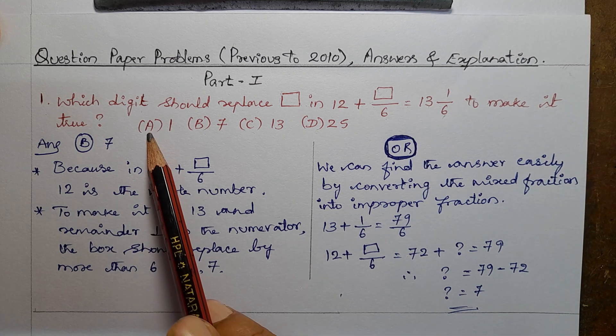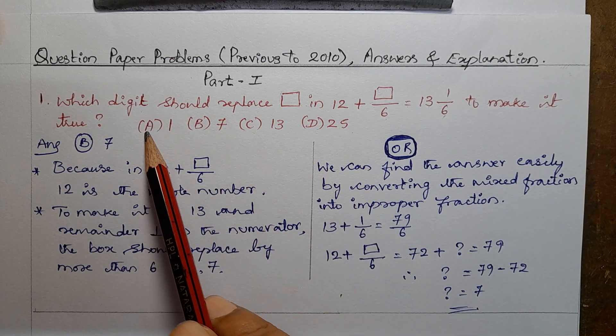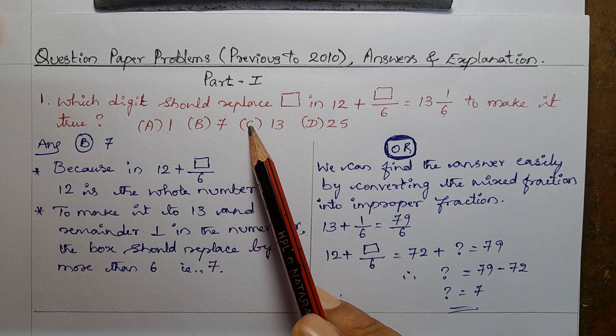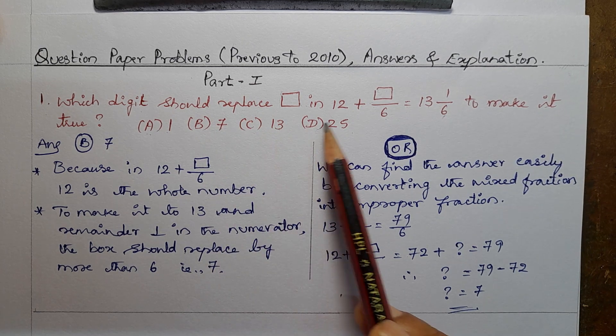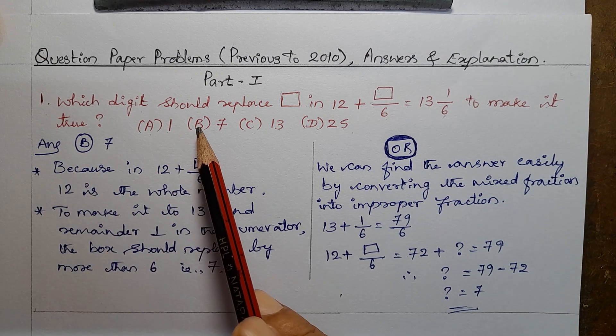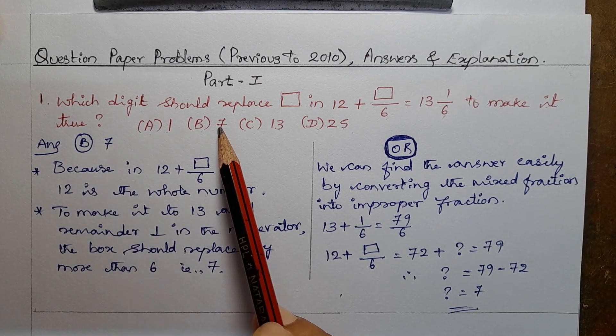So options are given. First, option A is 1, B option is 7, C option is 13, option D is 25. So answer is option B. B is the answer, so that is 7.